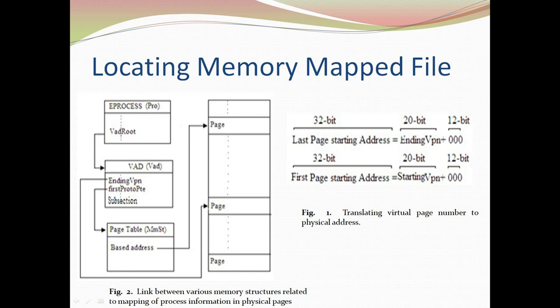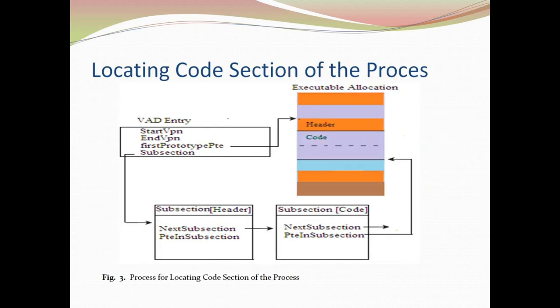As shown in Figure 2, the base address gives the starting address of the first page mapped for the file, and the ending VPN gives the last page by converting the 20-bit virtual page number to a 32-bit address by appending 12 zero bits. These techniques locate the starting and ending addresses of the pages for the particular file mapped in volatile memory.